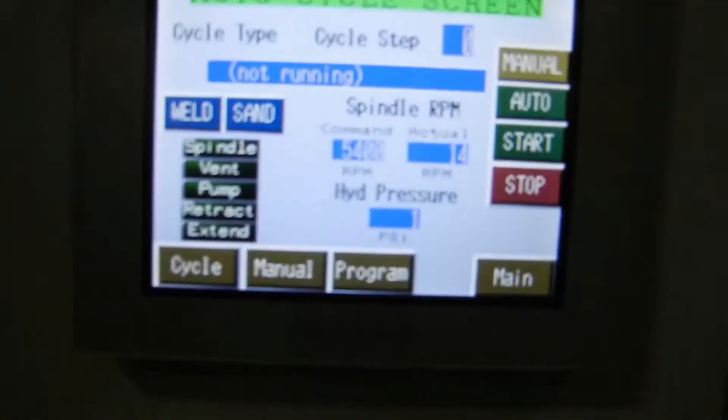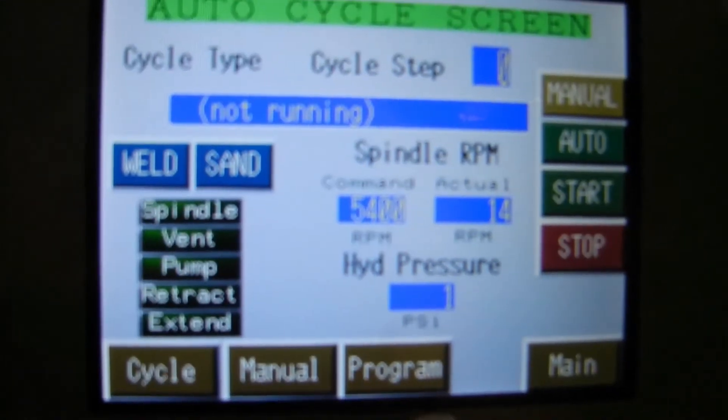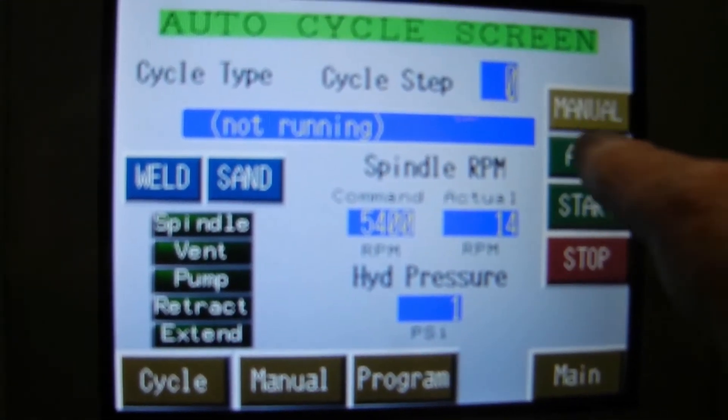Next we'll show you the controller that we use on the Gen 1 system. This controller is more complex than what we would imagine using on a field deployable Gen 2 system. You can see it's got five available positions for different weld programs.